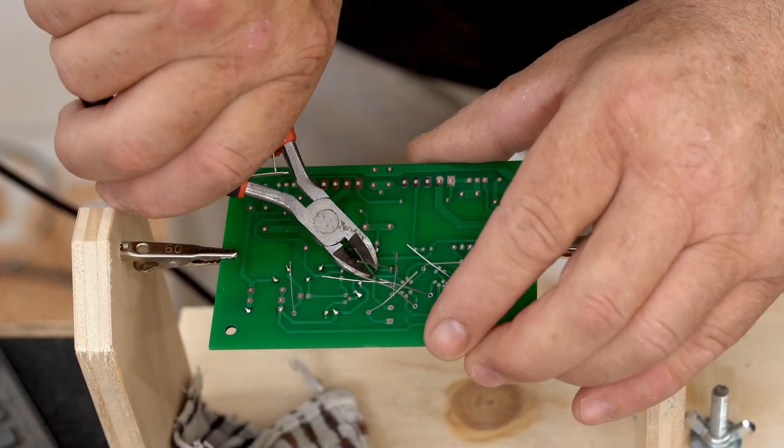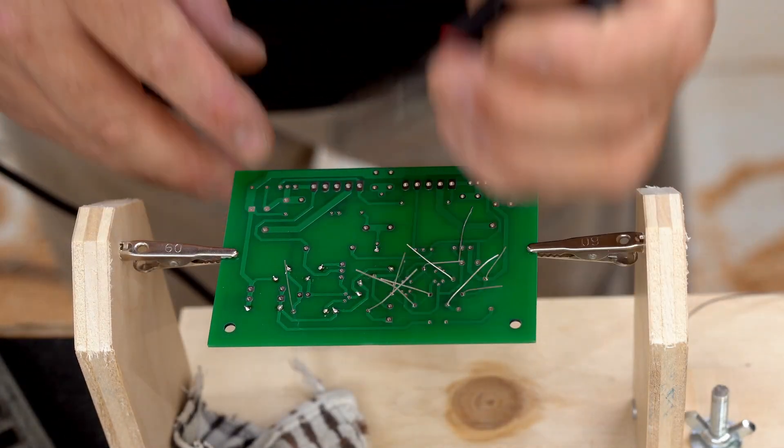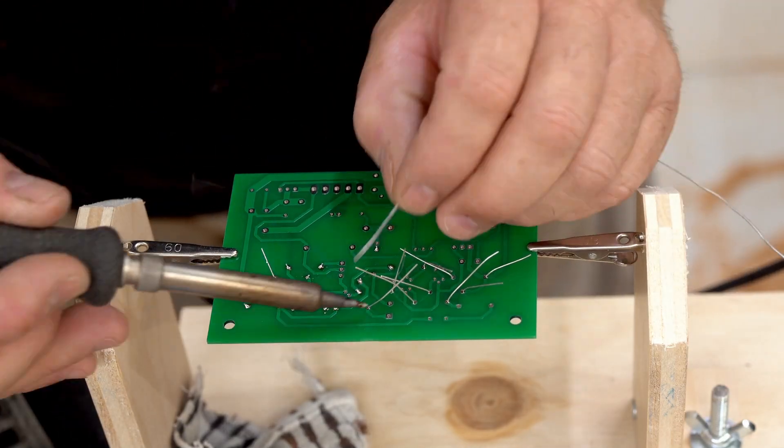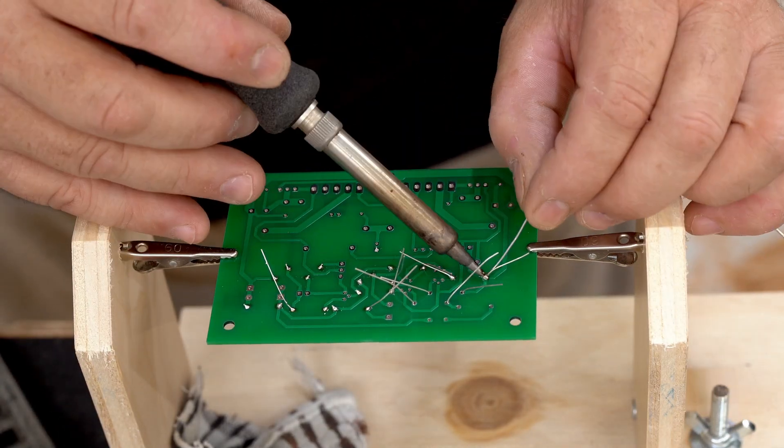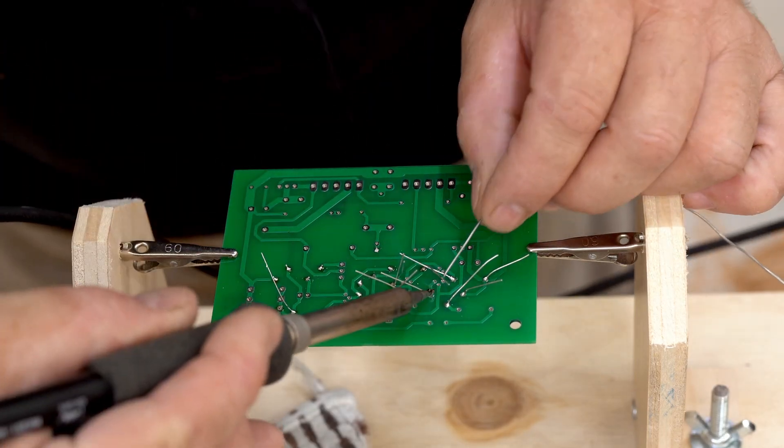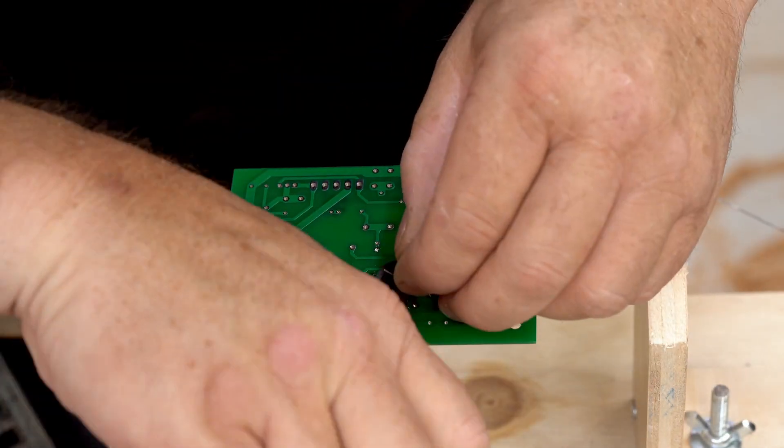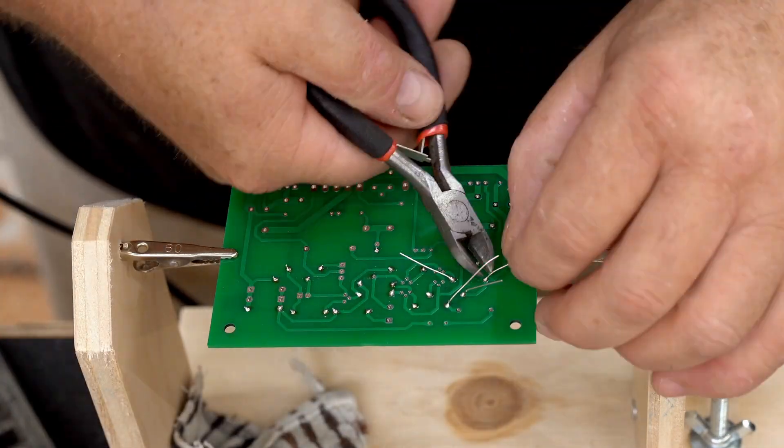So I started with the resistors and got all those put in, at least the small ones anyway, and then I moved on to the bigger components. Now this is my first time putting together a double-sided board like this with through-plated holes, and I gotta say it's a game changer for me. You really can't beat this.